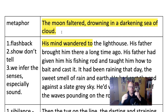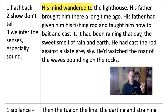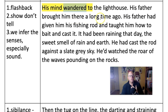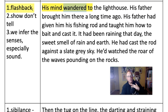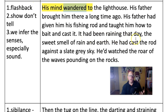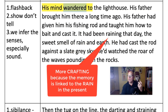Remember in the earlier description, it sounded like the lighthouse was right there and he could see it from the bus. Now I've changed the verb to 'wandered' so that we know this is a memory - 'his mind wandered to the lighthouse.' It's not actually there. His father brought him there a long time ago. His father had given him his fishing rod and taught him how to bait and cast it. So a flashback is a brilliant way to add events to your description but not turn it into a story. The trick is to make the flashback relevant to what you're describing on the bus. It had been raining that day - the sweet smell of rain and earth - and it's raining now on the bus, so it makes sense that this memory would come back to him.